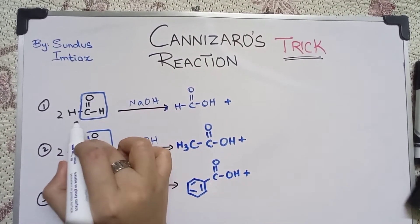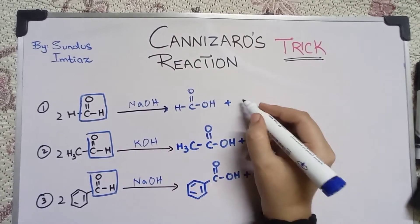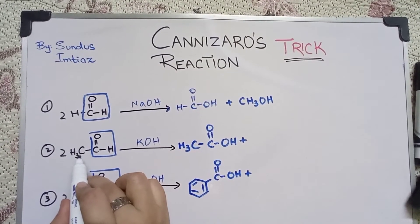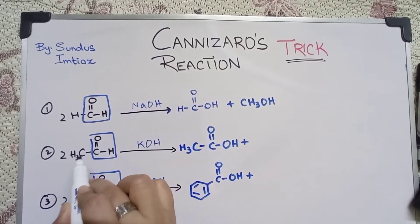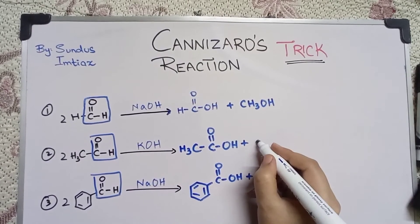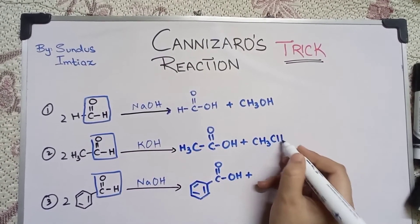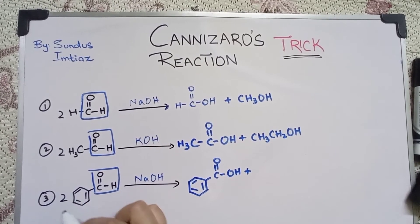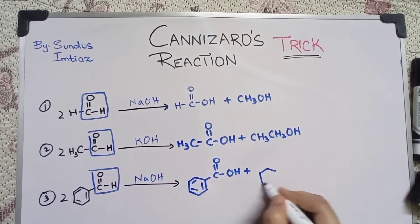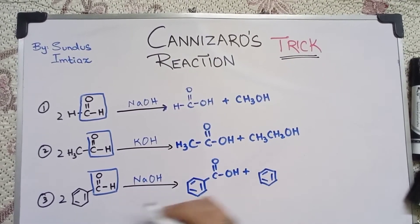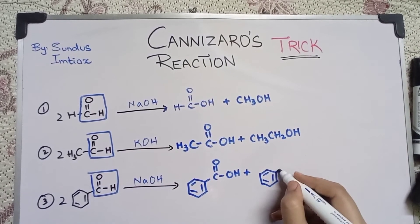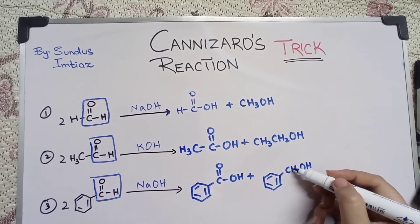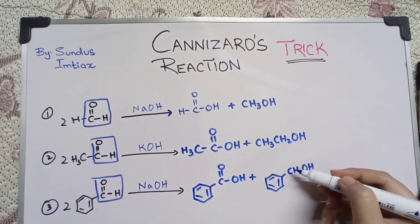Now moving towards the alcohol: this aldehyde has one carbon, so the alcohol should be a one-carbon alcohol. This reactant has two carbons, so the alcohol would be a two-carbon alcohol with the OH group. On the third one, it has a benzene ring with OH, so make the benzene ring, and since that aldehyde has one carbon, make a one-carbon alcohol. Complete the carbon valencies by giving the H atoms.